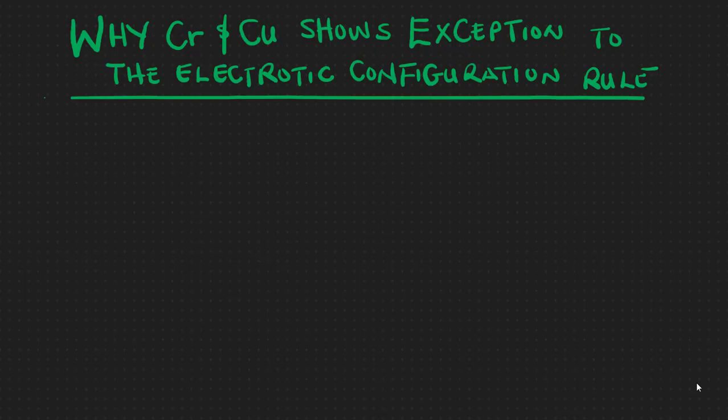In this lesson, I'm going to show you why chromium and copper show exceptions to the electronic configuration rule. Chromium and copper are the two elements on the periodic table that have shown exceptions to the electronic configuration rule.